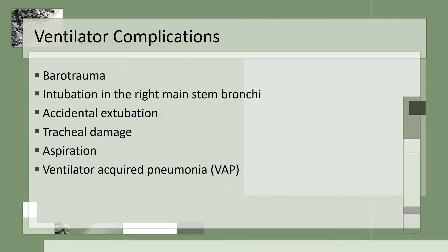The most common ventilator complications can include barotrauma, which would include pneumothorax or tension pneumothorax — these are treated with a chest tube. You will have unilateral loss of breath sounds: when listening to breath sounds in all quadrants of the lung, you will hear no sounds on one side, which is an indication of pneumothorax.